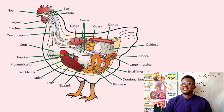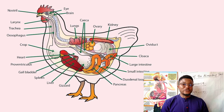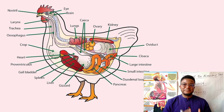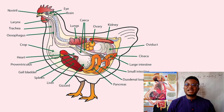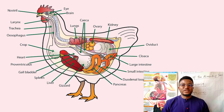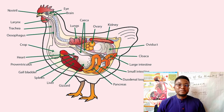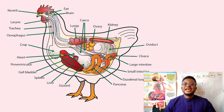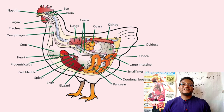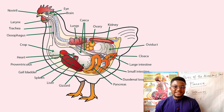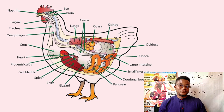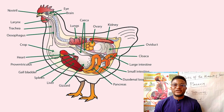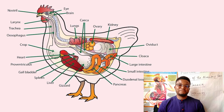From the crop, the food passes to the proventriculus where digestive enzymes such as pepsin and amylase are secreted onto the food. From the proventriculus, the food moves to the gizzard where it is further ground. The gizzard is also called the glandular stomach and it grinds the food with the aid of secreted acid.